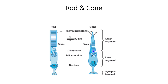In cones, the outer segment has similarly stacked membranes, but these are infoldings of the cell membrane rather than separate discs inside. These disc membranes contain a photopigment called rhodopsin in rods, and a molecularly related pigment in cones. Rhodopsin is synthesized in the inner segment and then moves via vesicles toward the outer segment.